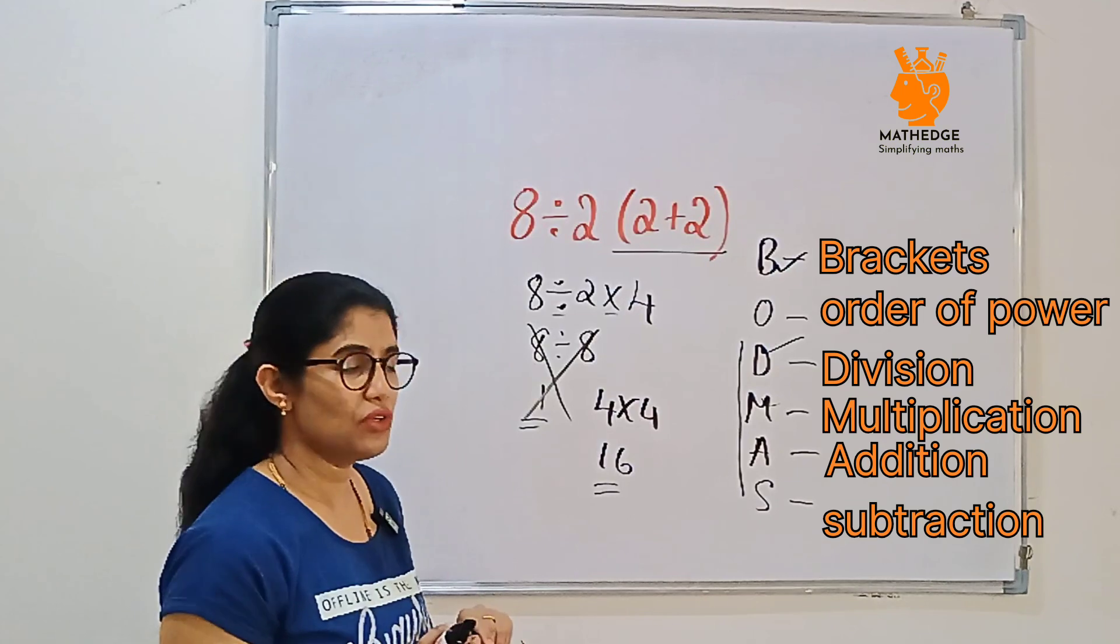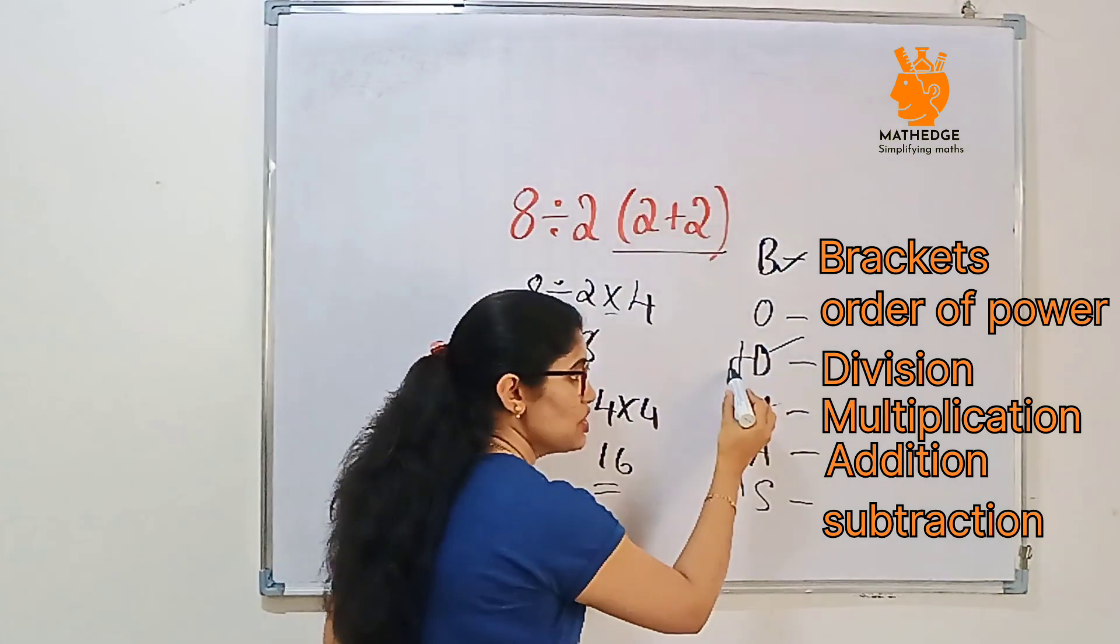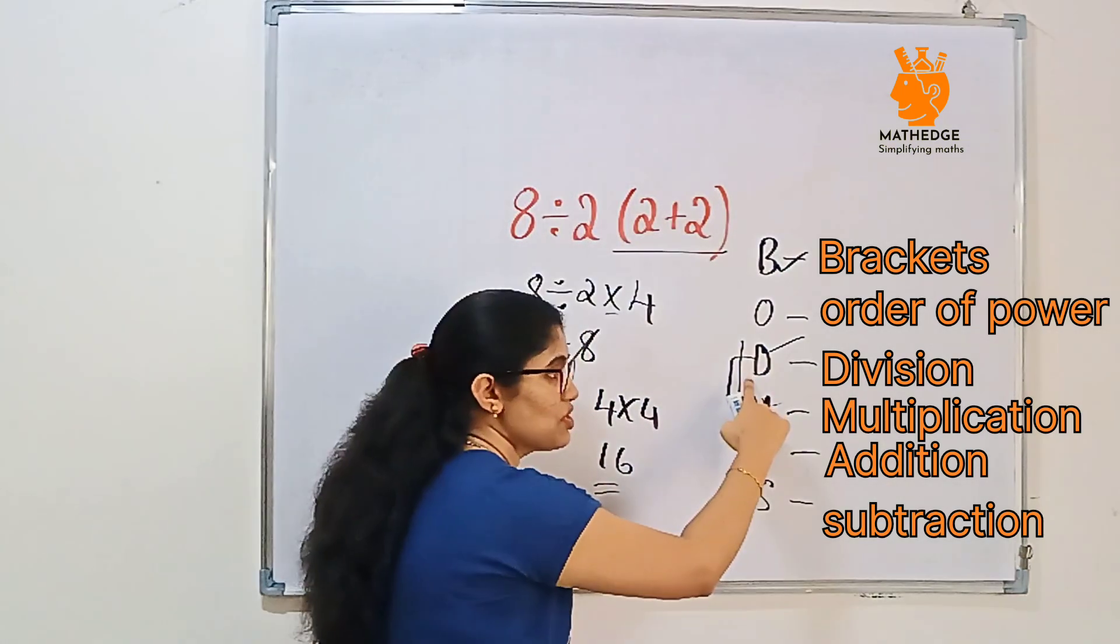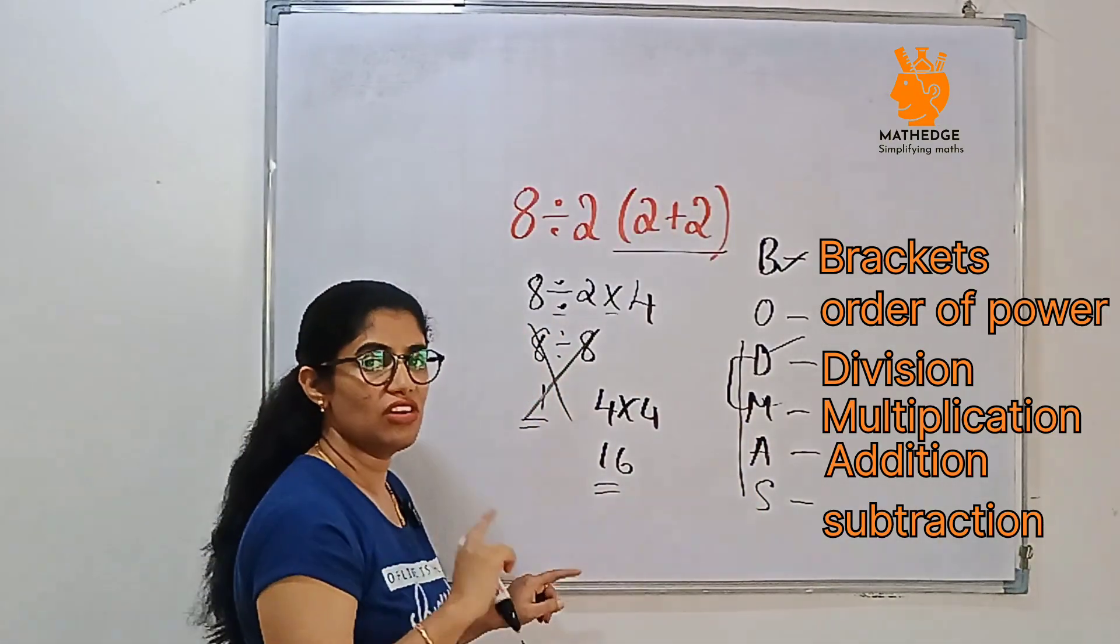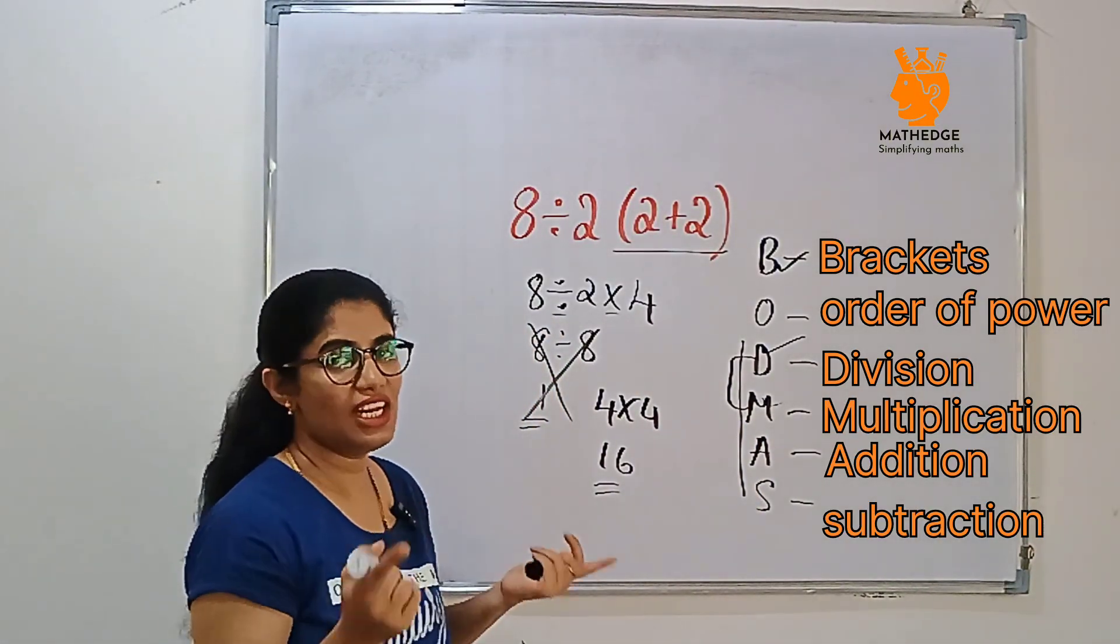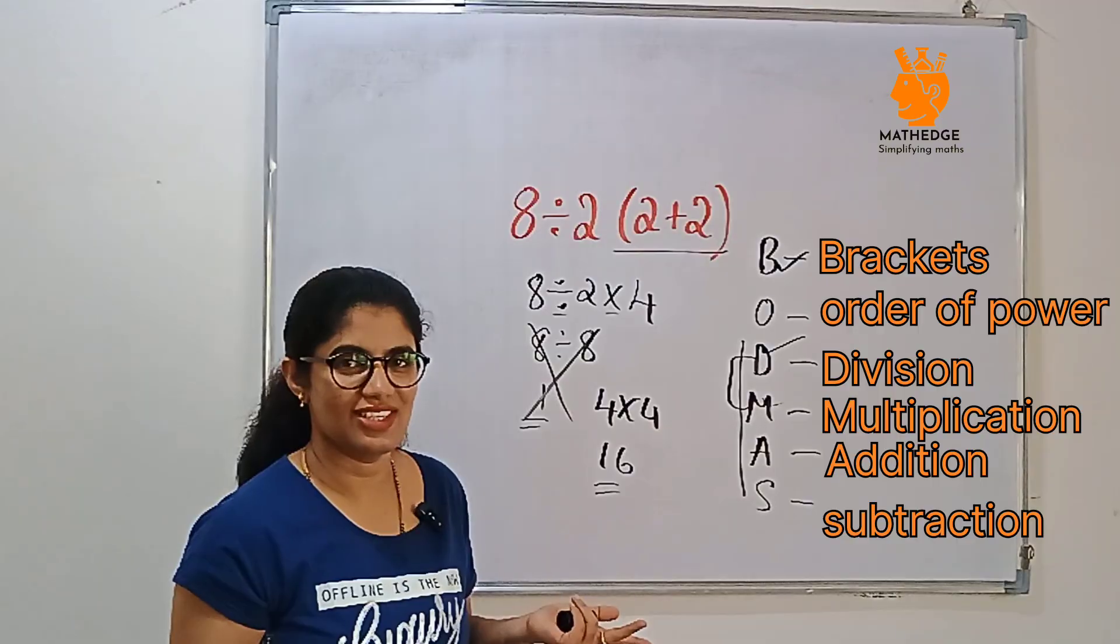Actually most of the people, where they will do wrong? Here only. Always they will choose multiplication first. We should go with division, multiplication, then addition, subtraction. Always we should do division first, then after that other operations.